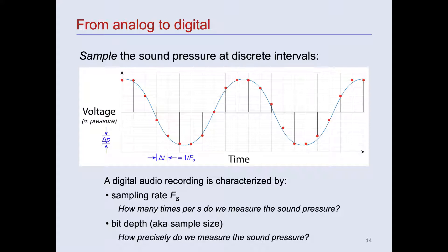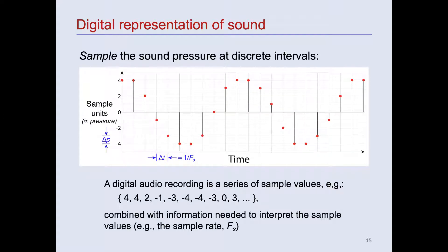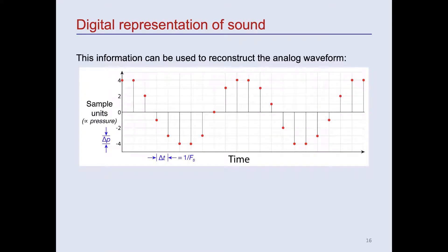So, a digital recording is comprised of a series of sample values proportional to the sound pressure at discrete times, at a rate given by the sample rate, F sub s, that's also saved in the audio file. This information can be used to reconstruct the analog waveform provided that the sample rate is fast enough, or delta T is small enough, and that the pressure measurement resolution is high enough, or delta P is small enough. We'll have more to say about sample rate and pressure measurement resolution shortly.